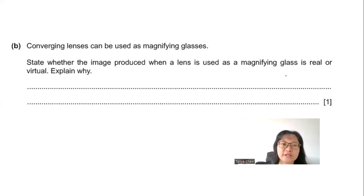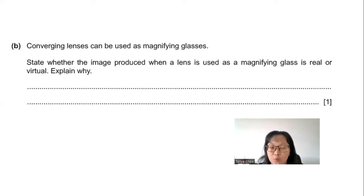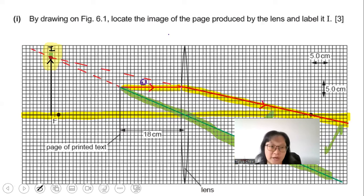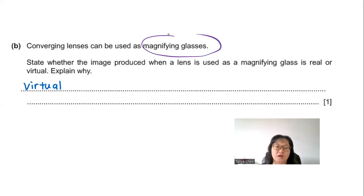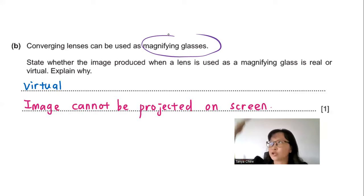Part B2: Converging lenses can be used as magnifying glasses. State whether the image is real or virtual and explain why. When used as a magnifying glass, the lens always produces a virtual image because the image is formed in front of the lens. Therefore, it cannot be projected onto a screen on the other side.